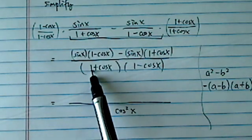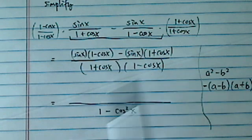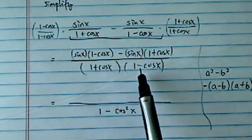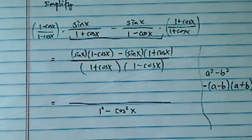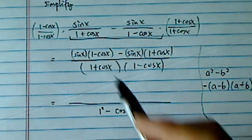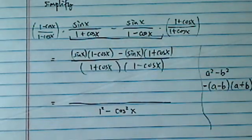Conveniently, we have 1 plus this thing, 1 minus the same thing, so it's a plus b, a minus b. Therefore, it's a squared, which is 1 squared, which is 1, minus b squared, which is cosine x squared. And then from here, all we have to do is clean it up.